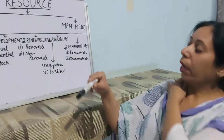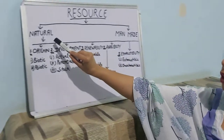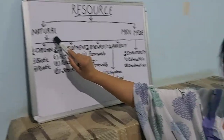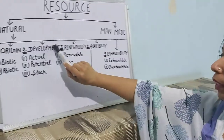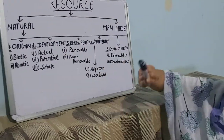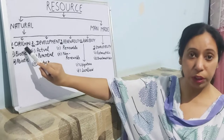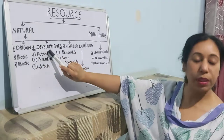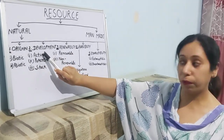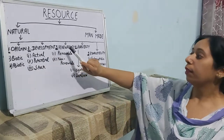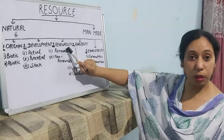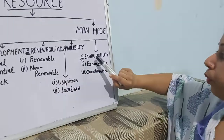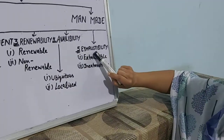Now I come to natural resources. Natural resources are classified into different categories: first is origin, second is on the basis of different stages of development, third is renewability, fourth is availability, and fifth is exhaustibility.